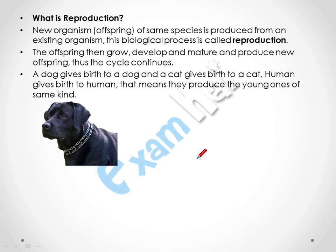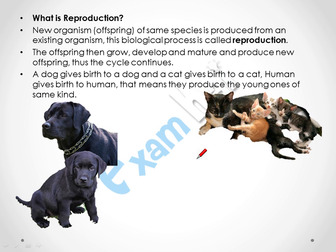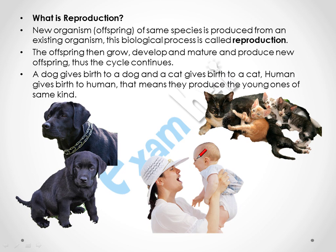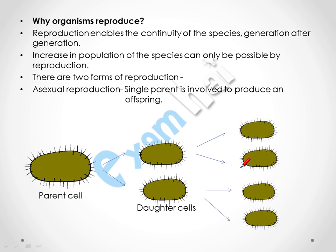In this you can see: a dog can give birth to a dog, a cat can give birth to a cat, and humans produce humans. That means all organisms produce organisms of the same species. Reproduction enables the continuity of species generation after generation and helps the species increase its population.